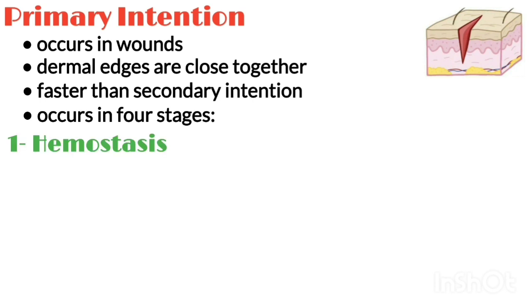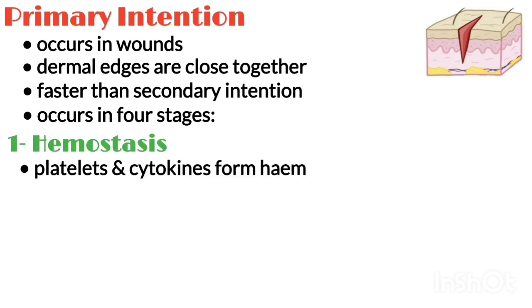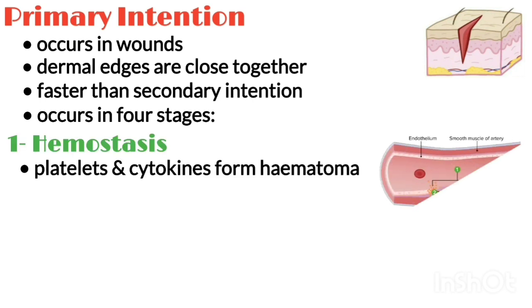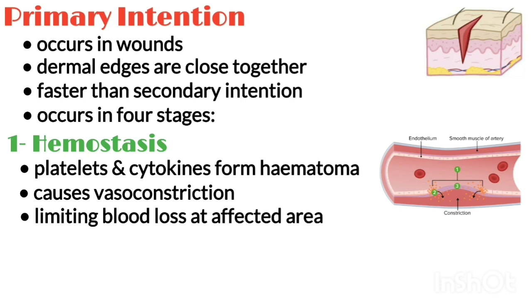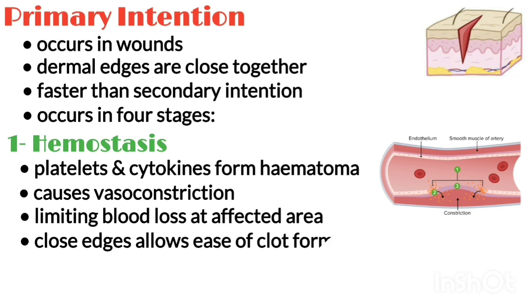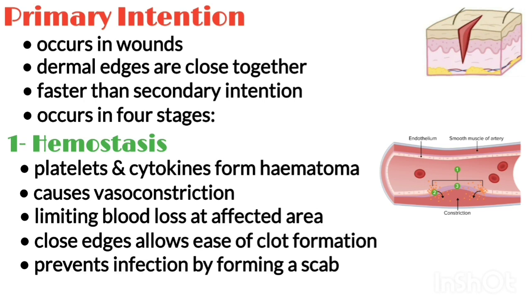Number one is hemostasis. The action of platelets and cytokines forms a hematoma and causes vasoconstriction, limiting blood loss at the affected area. The close proximity of the wound edges allows for ease of clot formation and prevents infection by forming a scab.